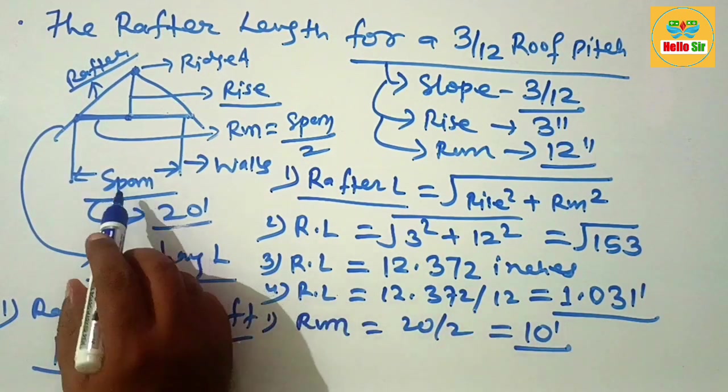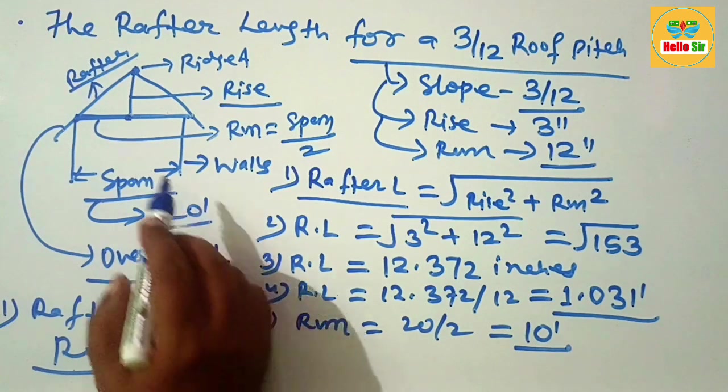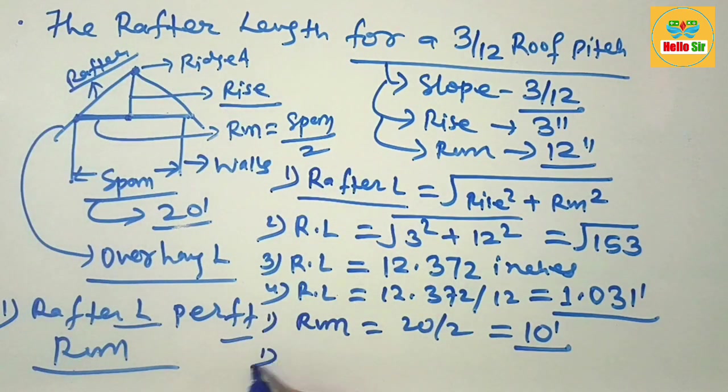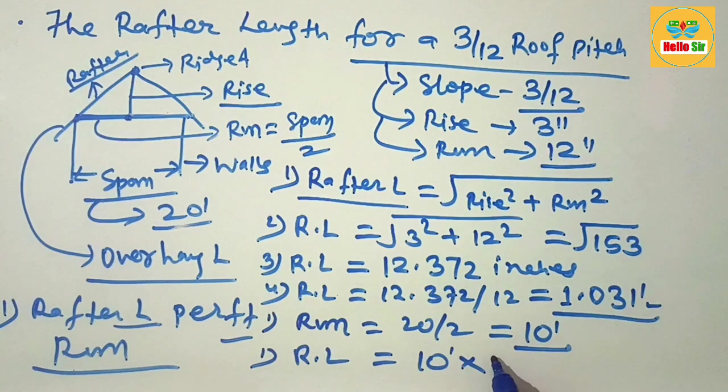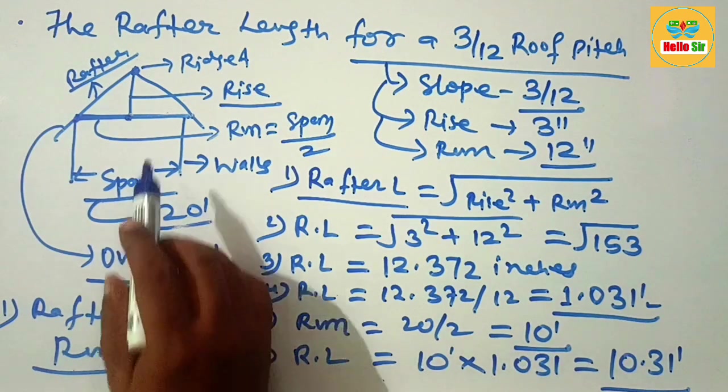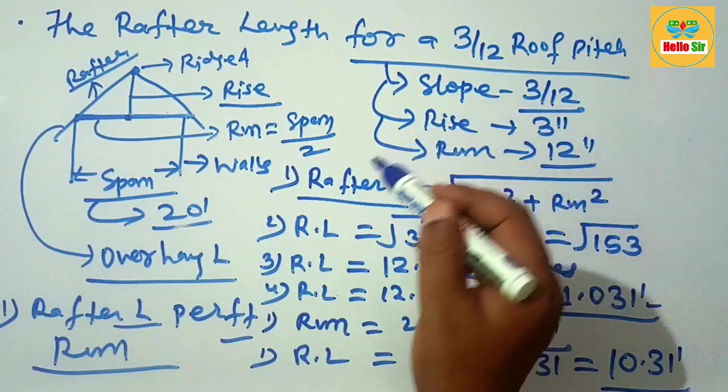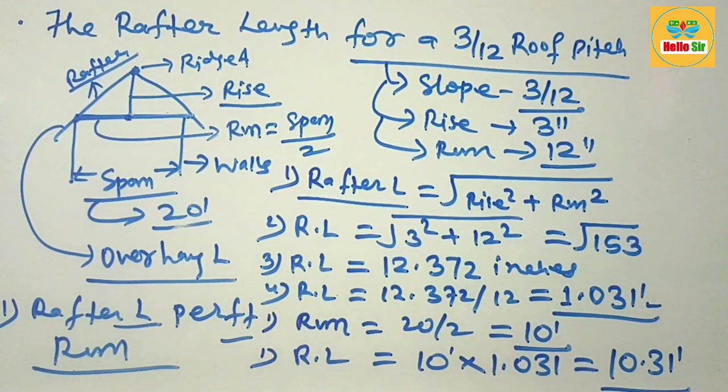If the span is 20 feet, what will be the rafter length? The rafter length is 10 feet multiplied by the common multiplier, which equals 10.31 feet. This is the calculation to figure the rafter length for a 3 by 12 roof pitch. Thank you.